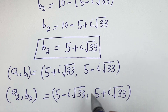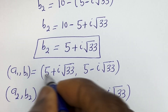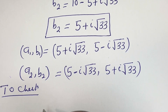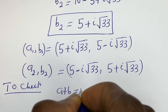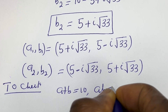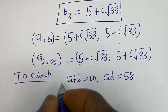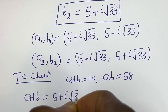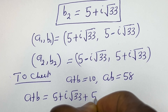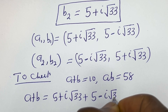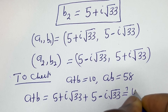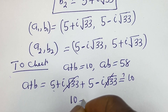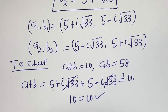We may check to confirm if this answer is correct. Let's check using A1 and B1. For the first equation, a plus b must equal 10: (5 plus i root 33) plus (5 minus i root 33) — the imaginary parts cancel, and 5 plus 5 equals 10, which equals 10. This is true.